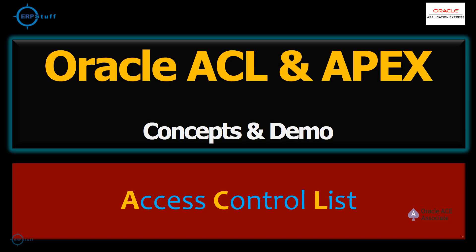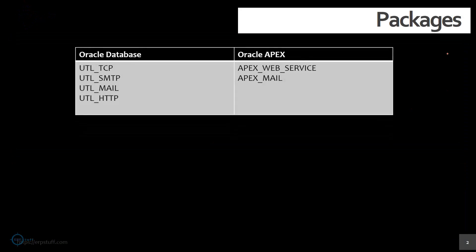So for that, you need ACL to be configured, and we will be discussing that in this session. Normally when you are using Oracle database, you will be using these packages for external communication — like consuming any web service, any connectivity to the Exchange server, sending emails, etc. On the same side, if you are using Oracle APEX, you will be using this package for calling external web services or APEX mail for sending emails.